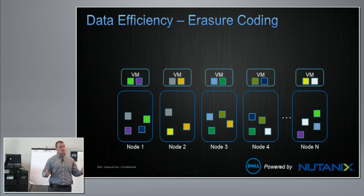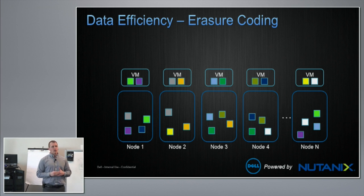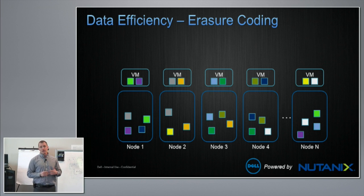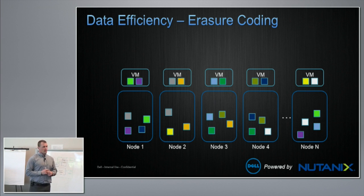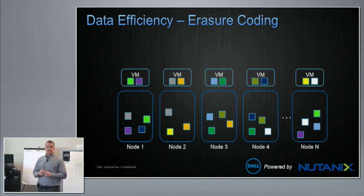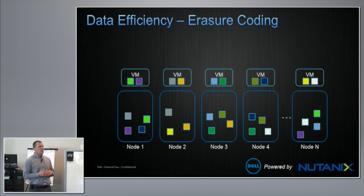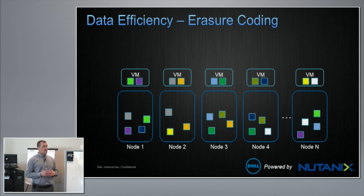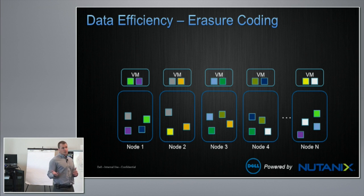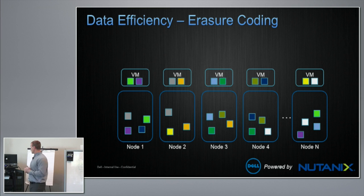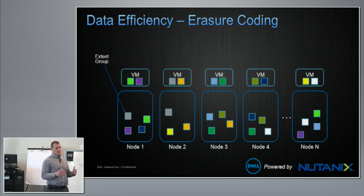Two features for Tech Field Day: erasure coding and VM Flash Mode. For erasure coding, it does not affect the write path, so you can have a highly random native workload and still use it. It's meant to be write-cold, read-hot. We have a concept of an extent group, which is 4MB — that's after everything's been coalesced.